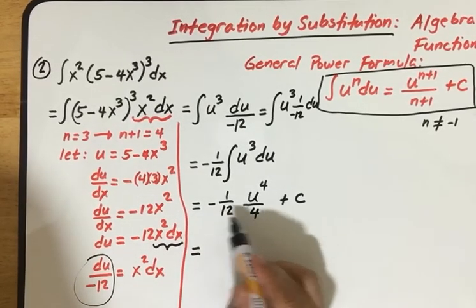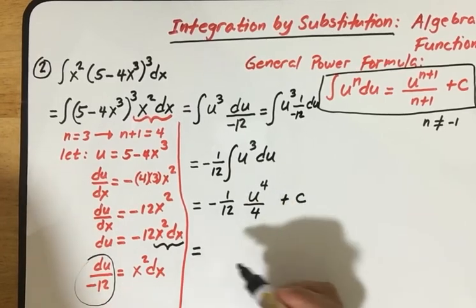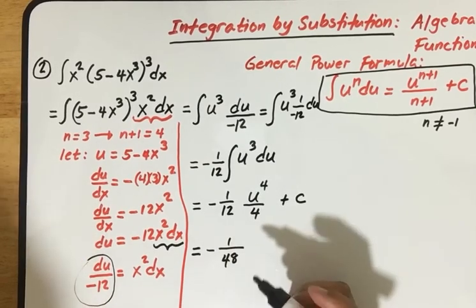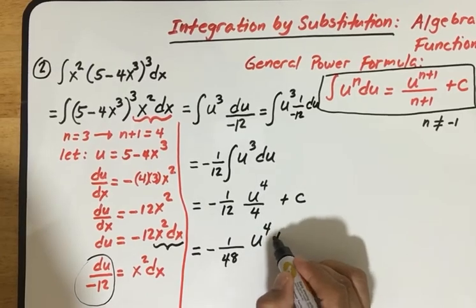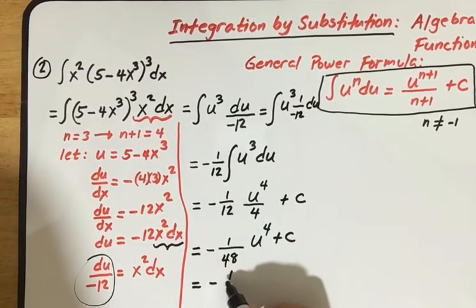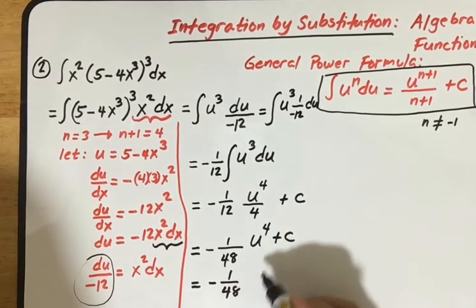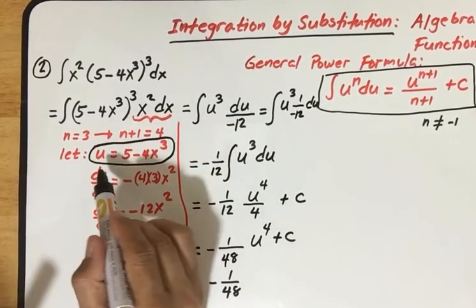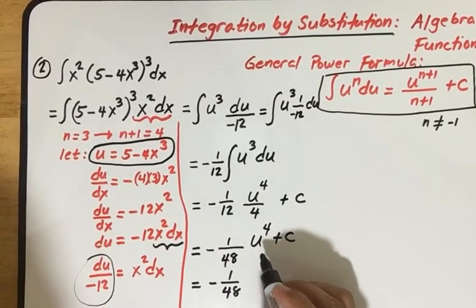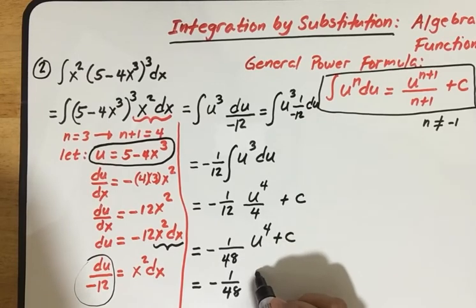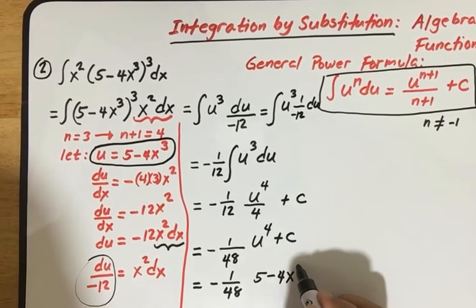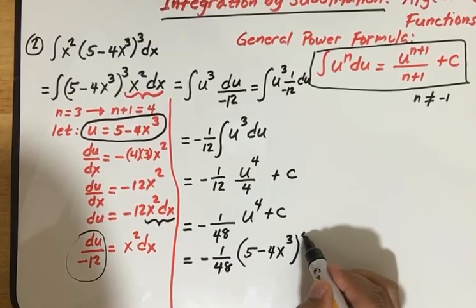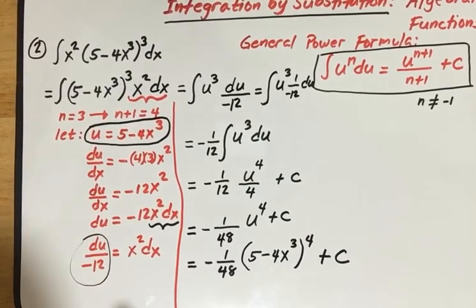Simplifying negative 1 over 12 times 1 over 4 gives negative 1 over 48. Substituting back our u, which equals 5 minus 4x cubed, our final answer is: negative 1 over 48 times (5 minus 4x cubed) raised to the power 4, plus C.